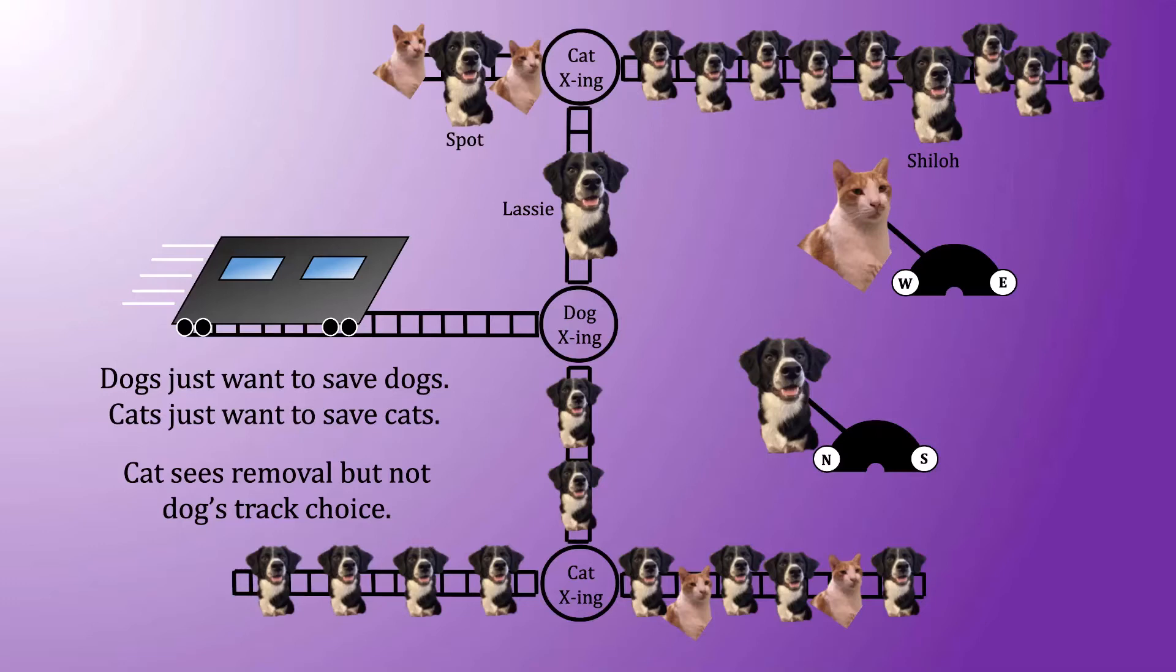With that in mind, here's the puzzle. Which of the three dogs should the main dog save? Spot, Lassie, or Shiloh? Bearing in mind that the choice that the dog makes may impact which of the directions the cat ultimately chooses.